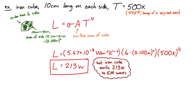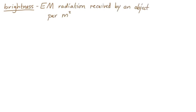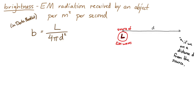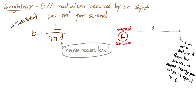Another useful concept is brightness. Brightness is the electromagnetic radiation received by an object per square meter per second. The equation for brightness is: B equals L over 4 pi d squared. If we have some source of electromagnetic waves with luminosity L, and we are a distance d away from that source, we receive electromagnetic energy per square meter per second given by the brightness. Notice there is a distance squared in the denominator — this is the inverse square law.